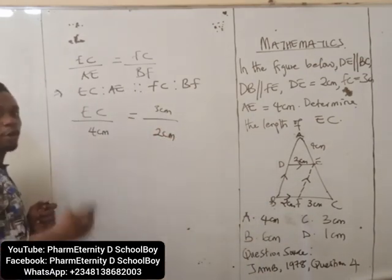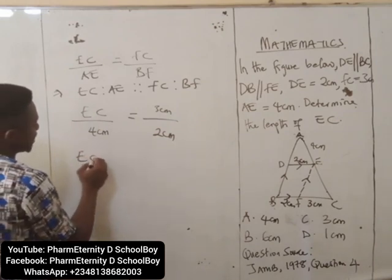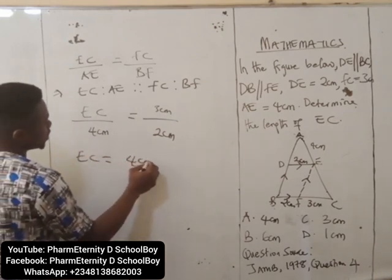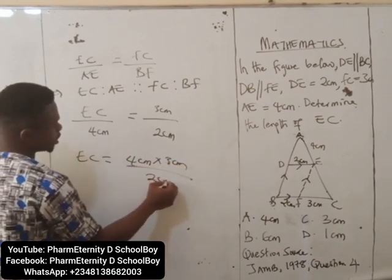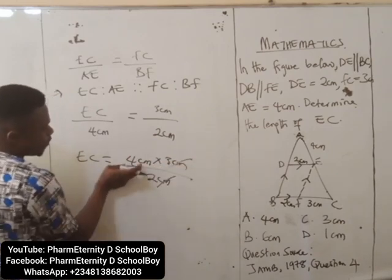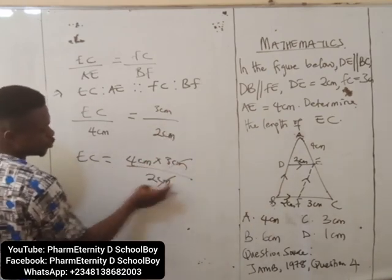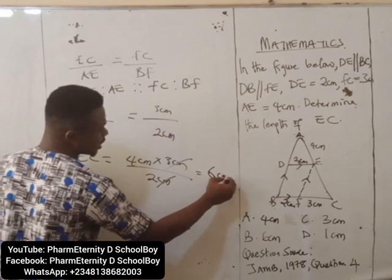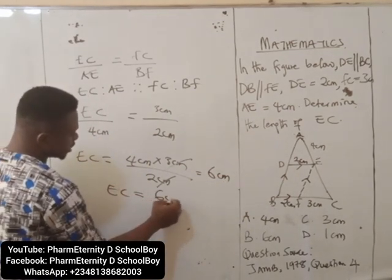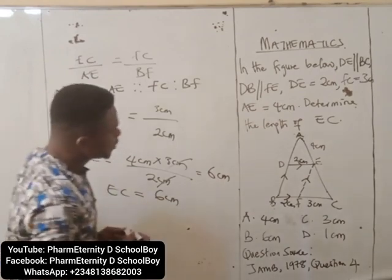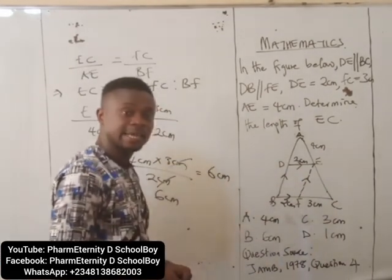So we cross multiply. That means EC equals 4cm times 3cm over 2cm. We cancel: 4 times 3 is 12, divided by 2 is 6cm. That means EC is equal to 6cm. So this length EC is 6cm.